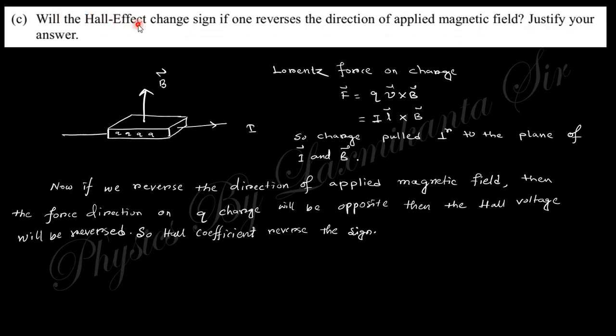Next question: will the Hall effect change sign if we reverse the direction of applied magnetic field? Justify your answer. Think this is a material, semiconductor or metal. If you apply this current through this material and this is perpendicular to the magnetic field, then the force applied on the charges which are moving through this conductor is like that: F equal to q v cross B, that is, i l cross B. If you cross product this i cross B, if the charge is forced along that direction, that's why there is a charge separation and produces the Hall voltage perpendicular to this B and i.